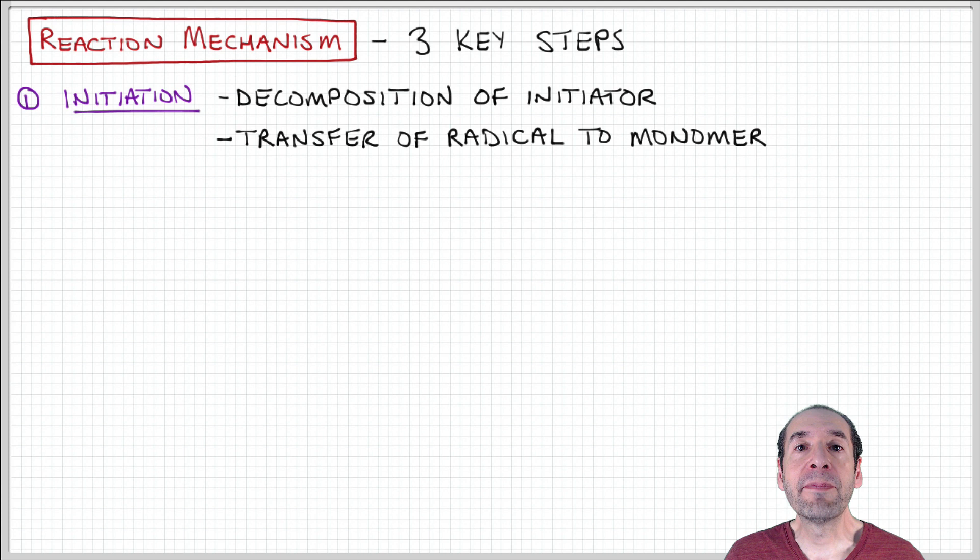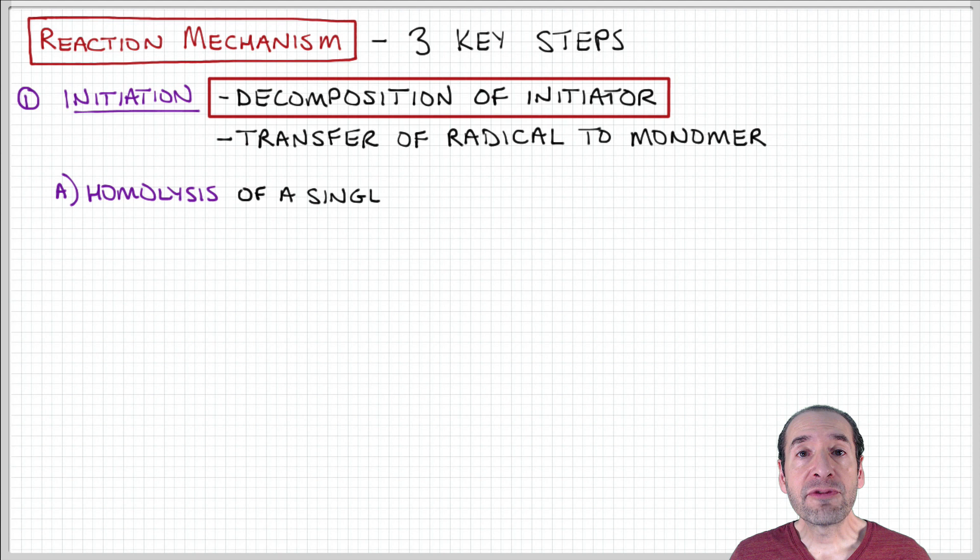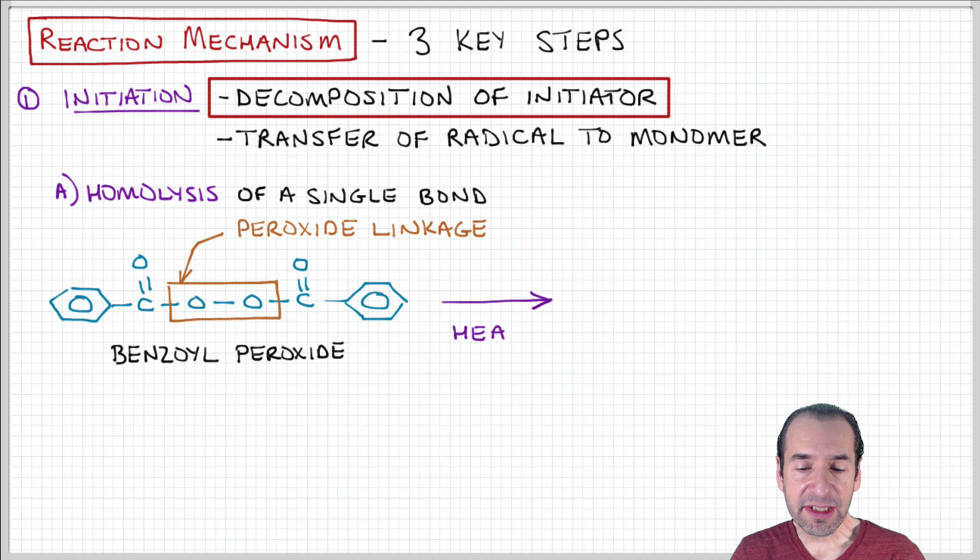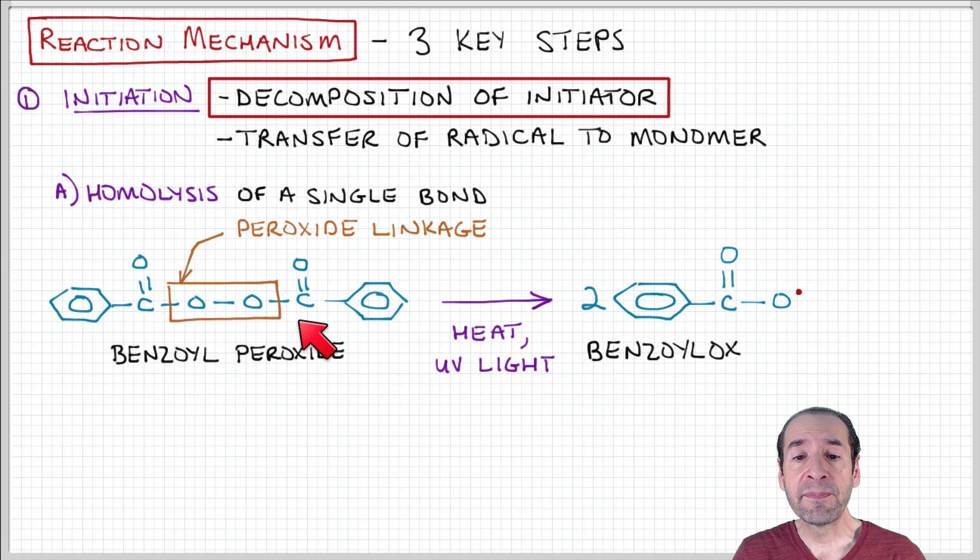The first step is initiation, and this deals with creation of this free radical active site, which, remember, is the key to enabling addition of monomers sequentially at the end of a growing polymer chain. And this occurs by cleavage of a chemical group in some kind of initiator additive to form a species that has a free radical active site.